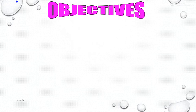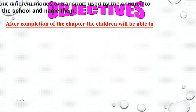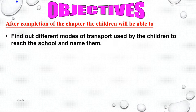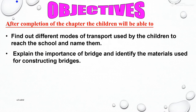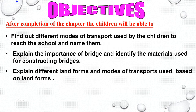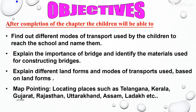Now we will see the objectives of today's lesson. After completion of the chapter, children will be able to: find out and name different modes of transport used by children to reach school; explain the importance of bridges and identify materials used for constructing them; explain different landforms and modes of transport based on landforms; and do map pointing to locate places in India.